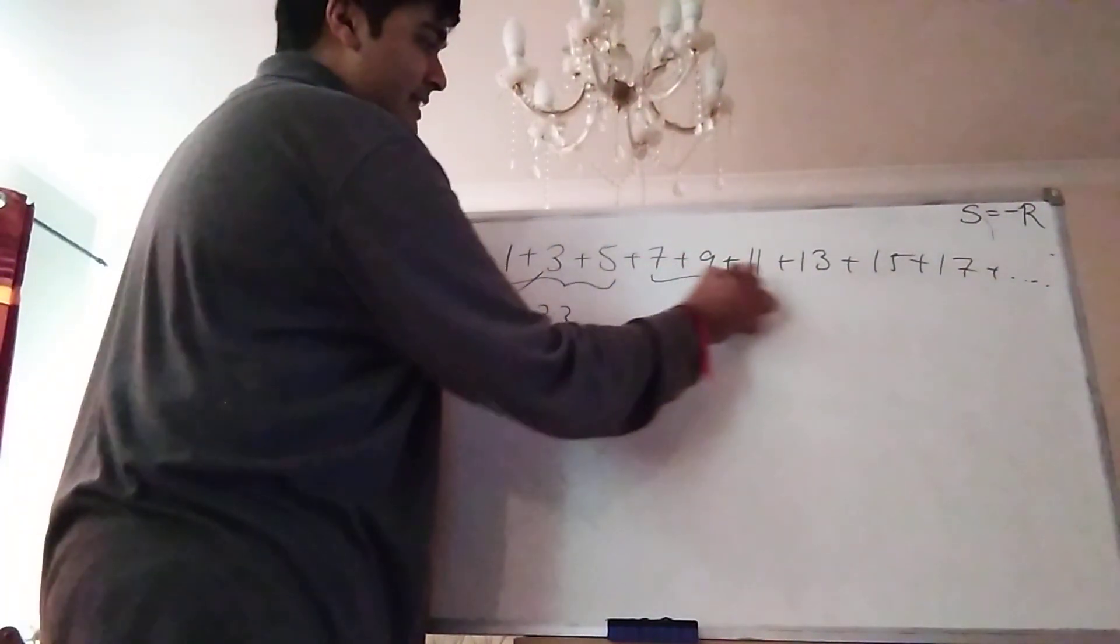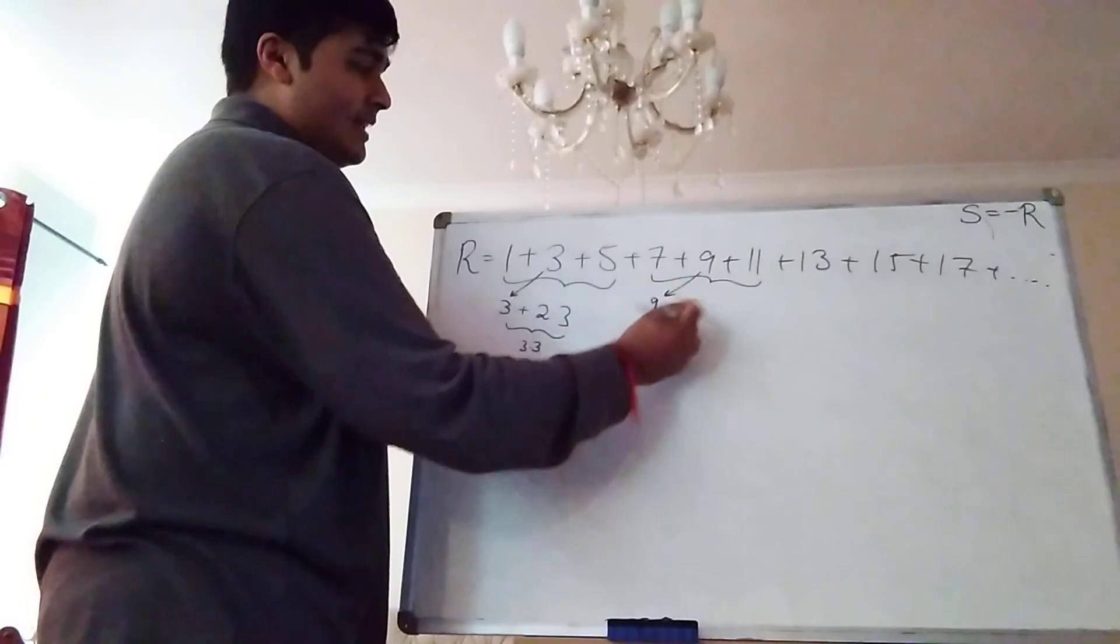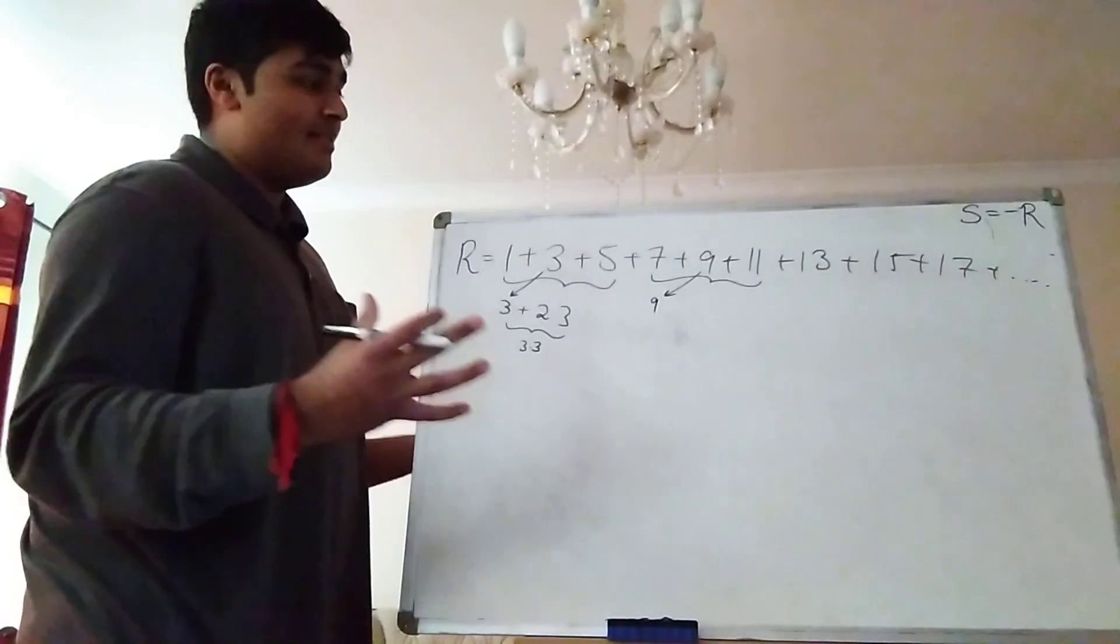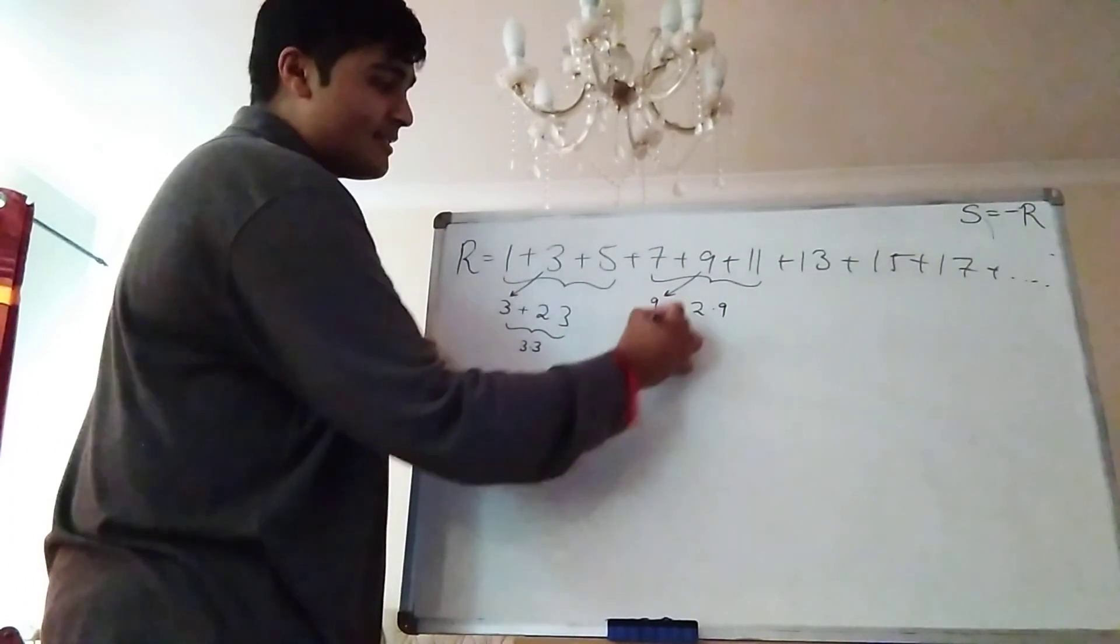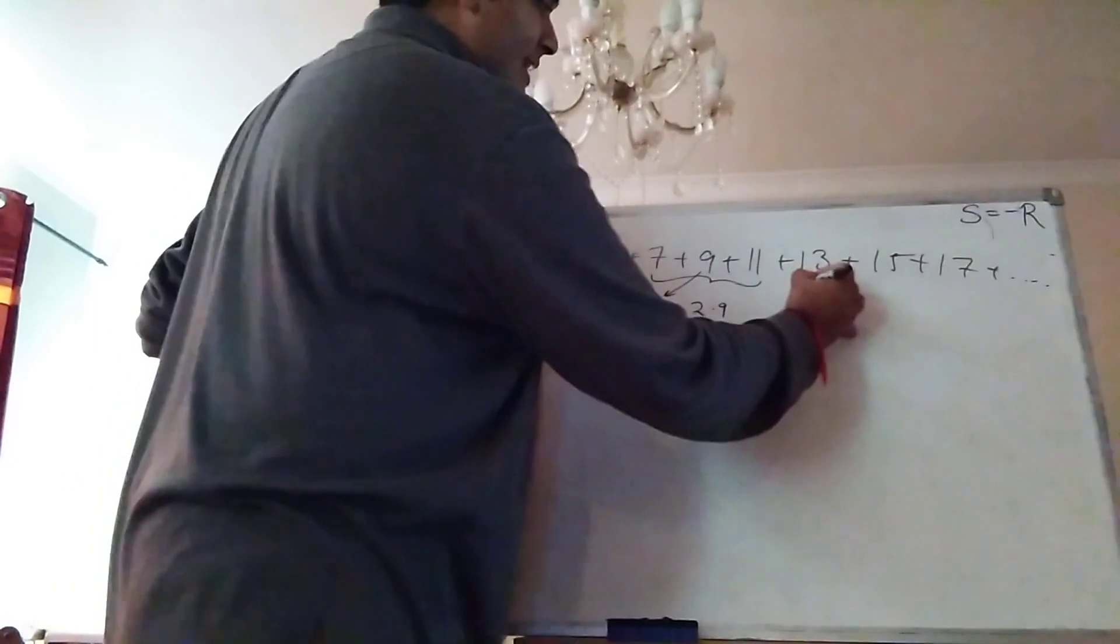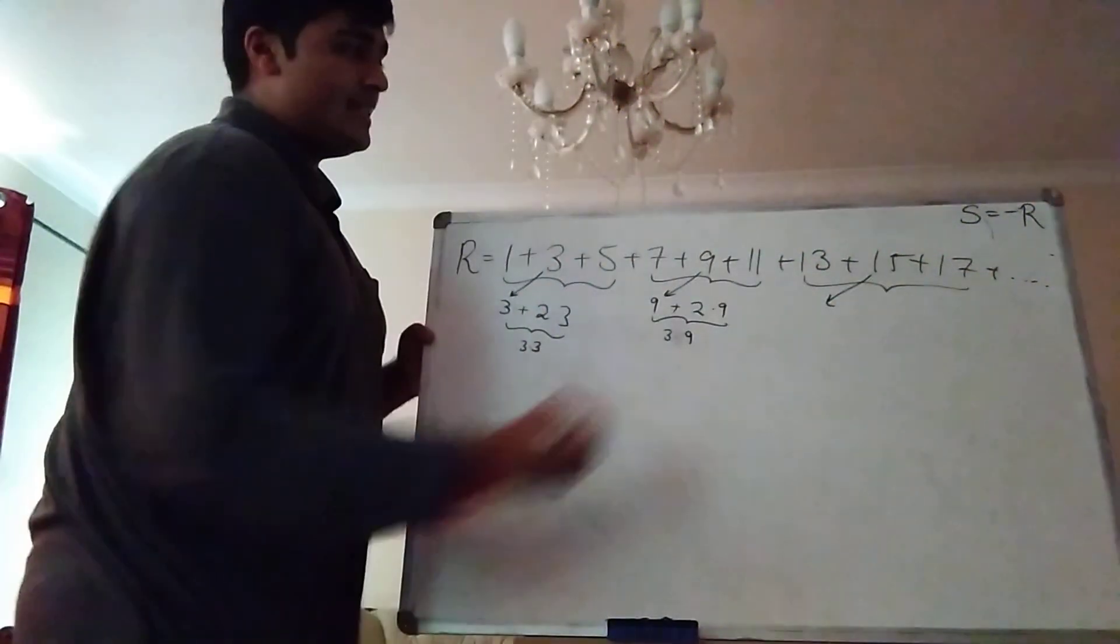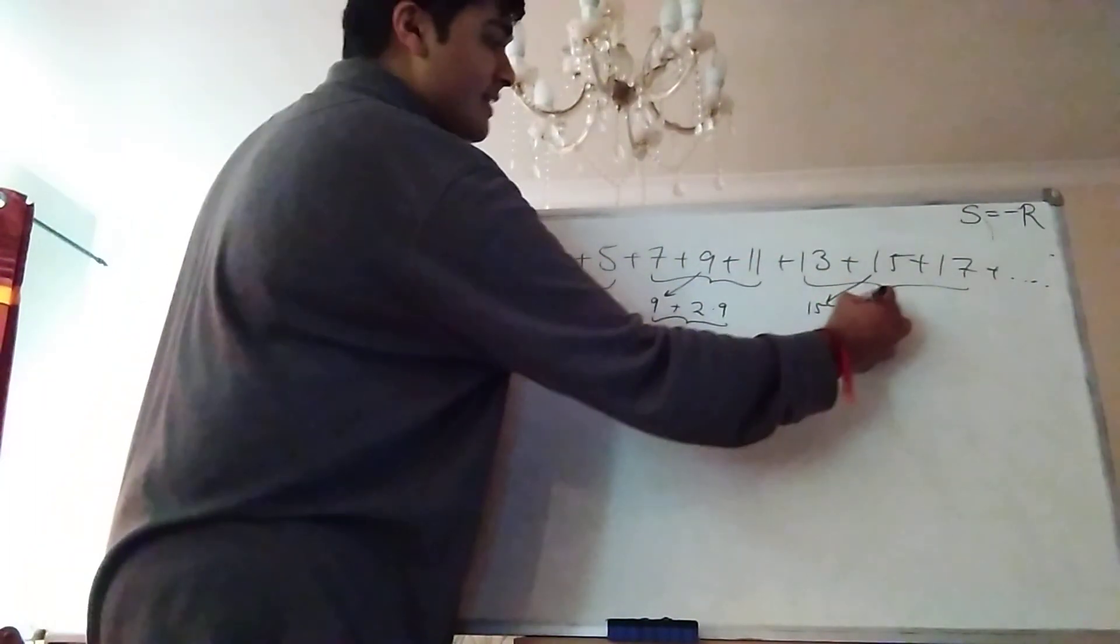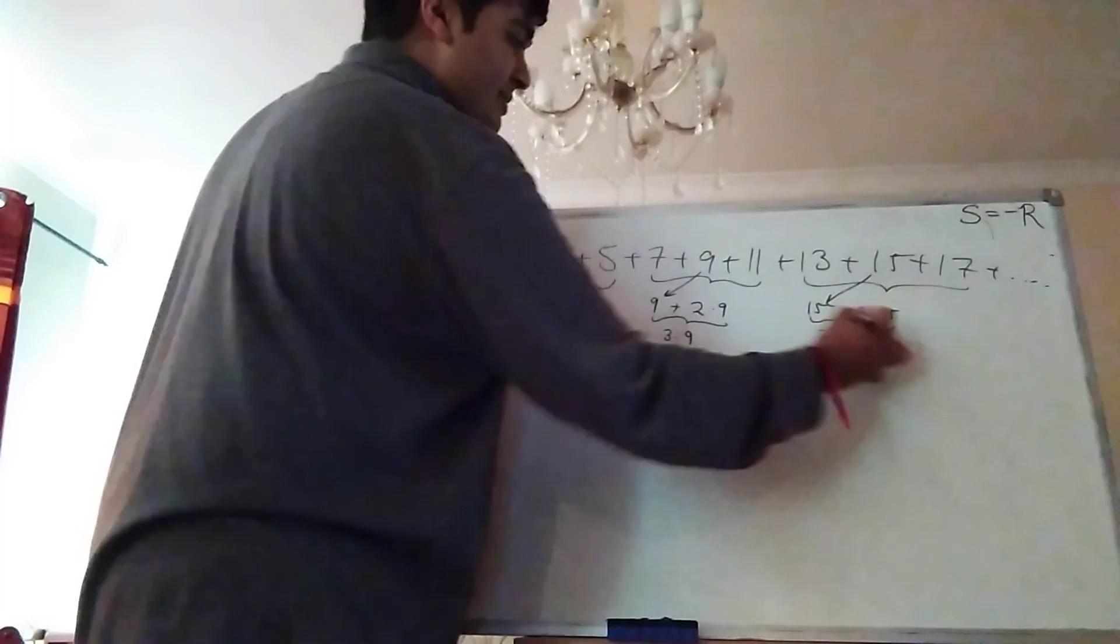Okay, let's look at the next three terms. 7 plus 9 plus 11. Let's bring the 9 down here. And then 7 plus 11 is 18. But 18 is 2 times 9. So I get a similar sort of thing here. 9 plus 2 times 9. That's nothing but 3 times 9. And same thing goes on here. If I bring the 15 here. And 13 plus 17 is 30. Which is 2 times 15.